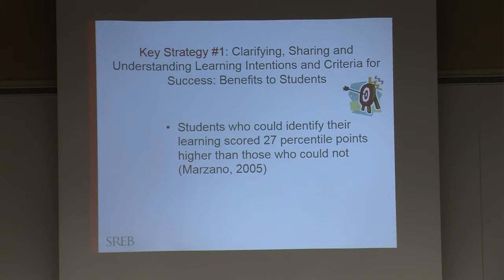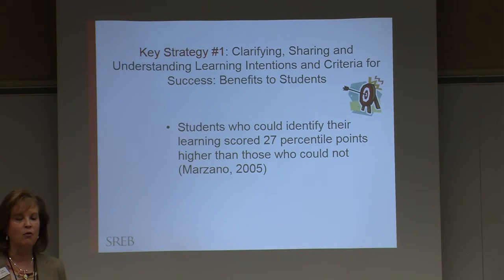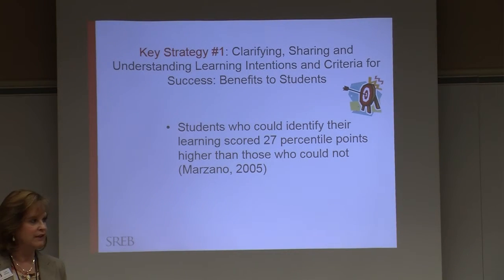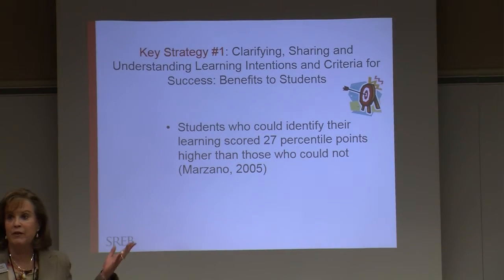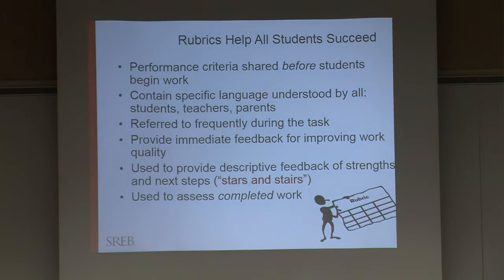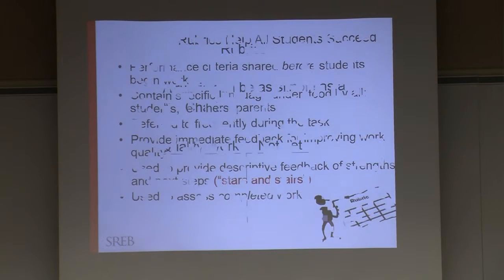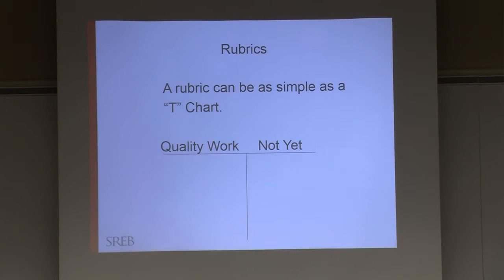Sharing and understanding learning intentions and criteria — in other words, kids have to know what the mark is. They have to know what it is they're learning and why they're learning it so they know when they get there. You do that with rubrics. A rubric can be as simple as a T-chart.